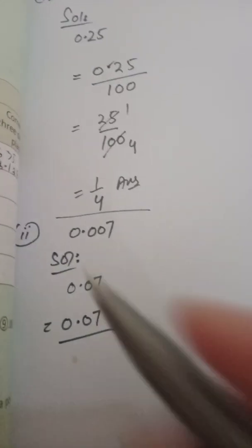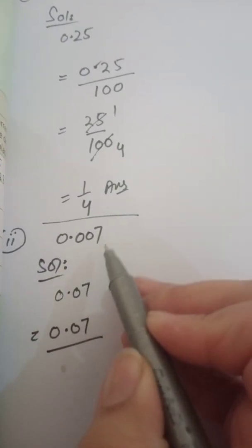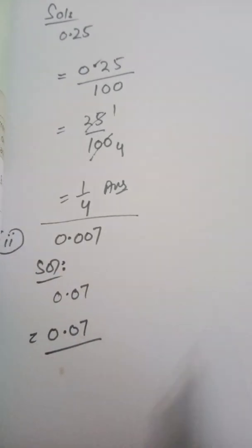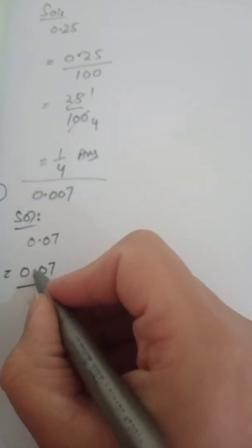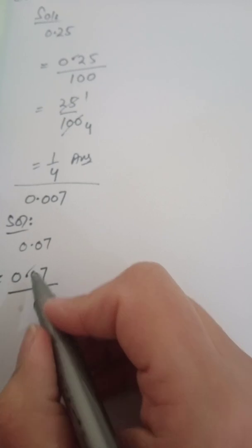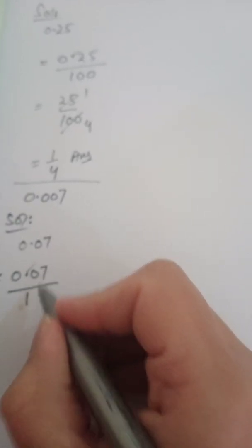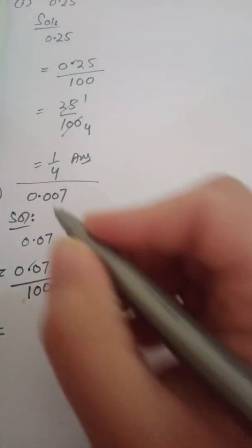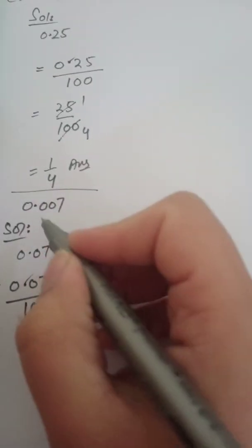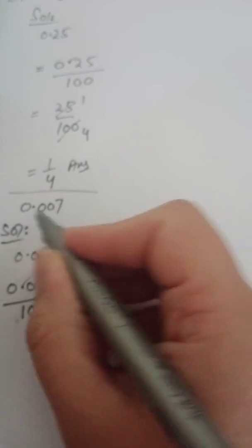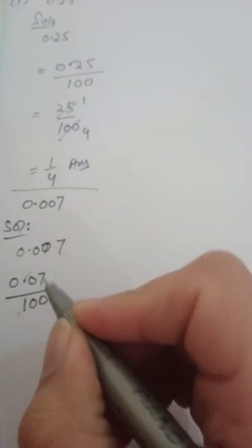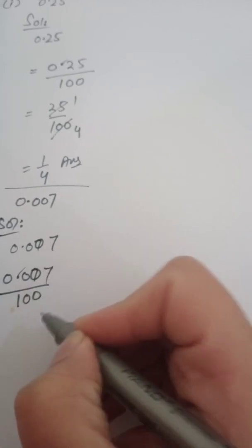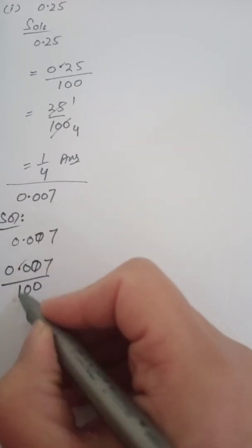Part number two is 0.007. To convert this decimal to a fraction, we remove the decimal point. Sorry — let me correct that: the number is 0.007, where the first two digits after the point are zeros and the last digit is seven.